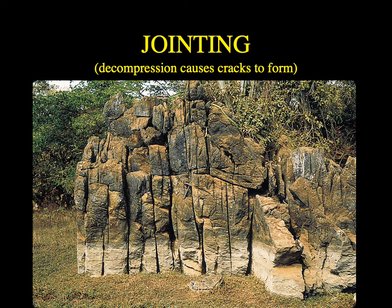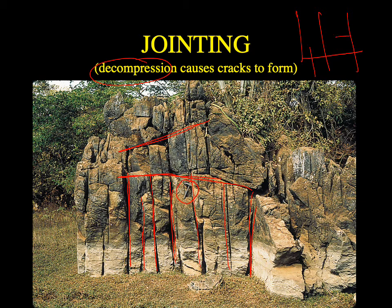Joints are formed by decompression or stress release. This outcrop shows a lot of crack sets — a couple going this way, a couple going that way — and all these cracks are called joints. Joints tend to be cracks at right angles to each other. Jointing is where rocks crack apart and just pop open, cracking open, forming when cracks have right angles to each other.